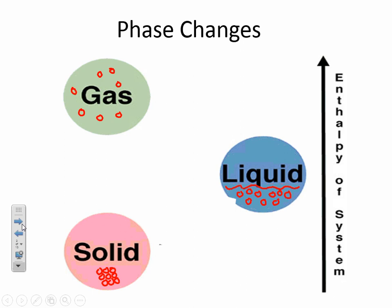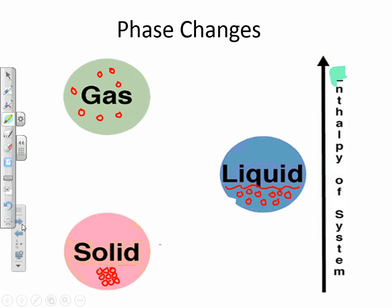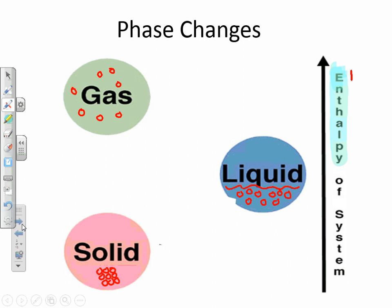Now, this term enthalpy — enthalpy is the heat of a system. It's just another term for heat. Notice that the enthalpy of the system increases as we go up this diagram.